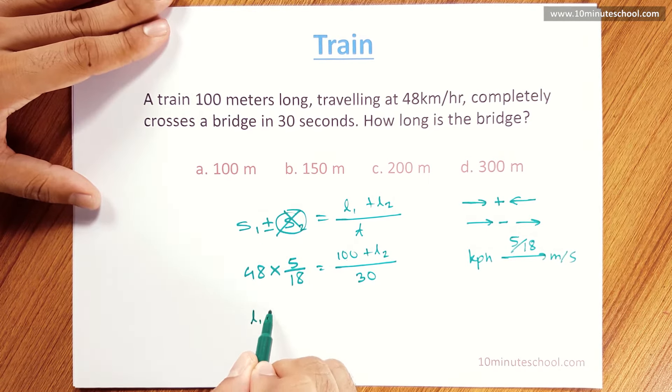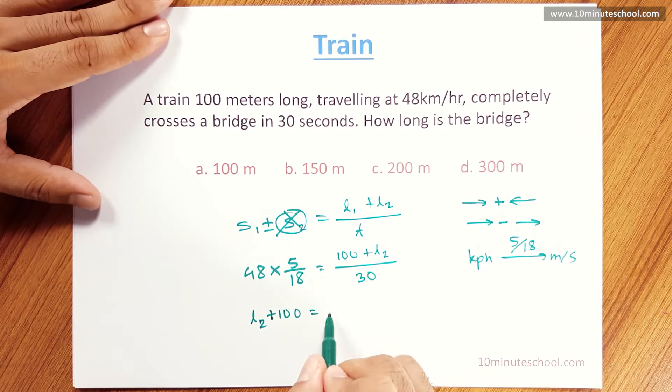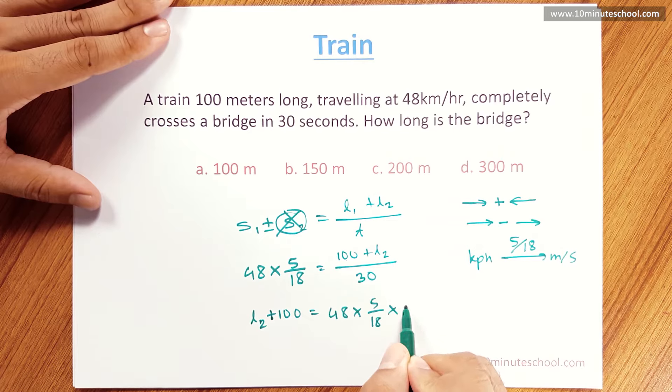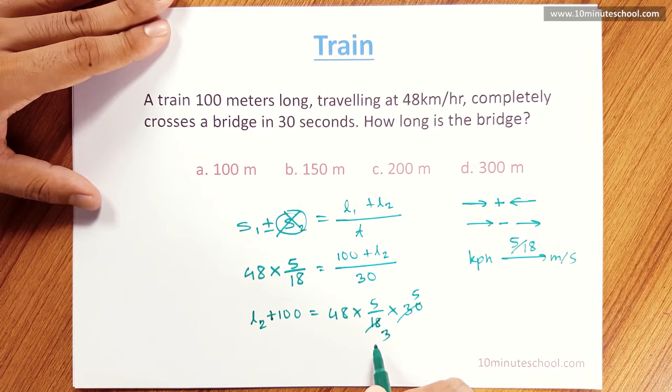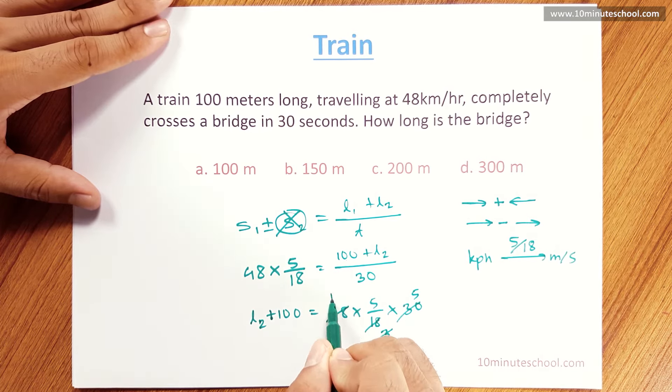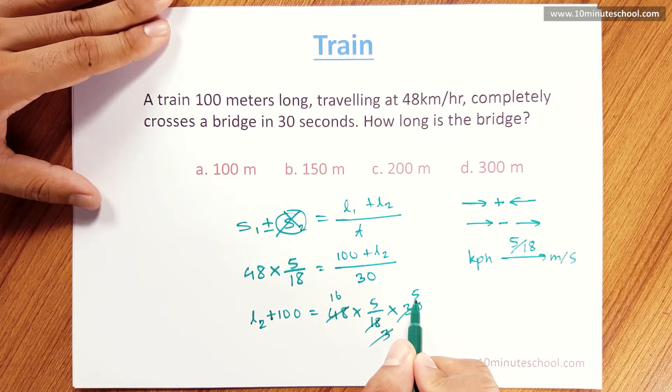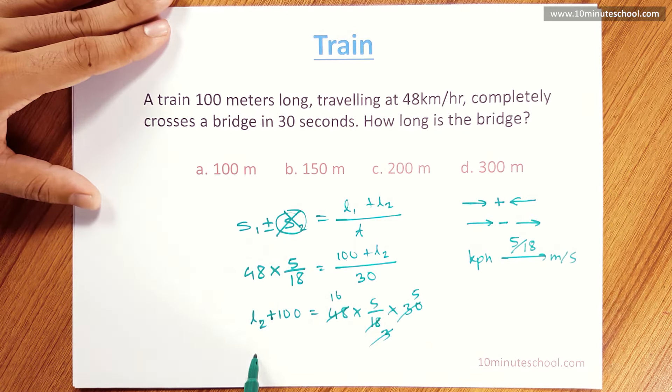We'll calculate the length. I am going to simplify this: this is 5 and this is 3 and this is 16. So 5 times 5 is 25, 25 times 16 is 400.